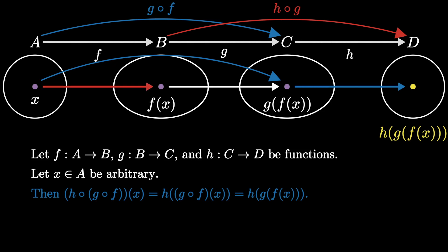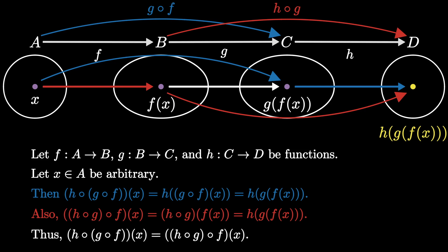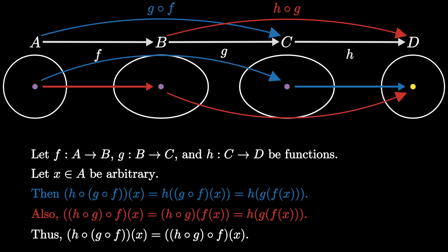Similarly, we end at that exact same element when we send x through f and the resulting output through h composed g. So h composed g composed with f of x is equal to h composed g of f of x, which is equal to h of g of f of x. Therefore, the two compositions map x to the same element no matter what x is, so the two compositions are equal as functions.